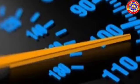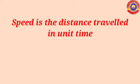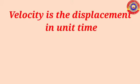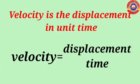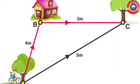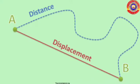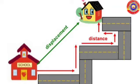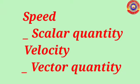Excess speed and careless driving are the two major reasons for accidents. Speed is the distance travelled in unit time — speed equals distance divided by time. Velocity is the displacement in unit time — velocity equals displacement divided by time. Displacement is the straight-line distance from the initial position; we don't consider the path taken. So speed is a scalar quantity and velocity is a vector quantity.